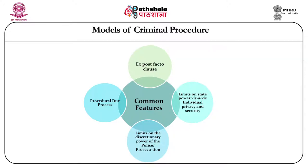The fourth and last common ground is procedural due process. Both models accept that there should be a procedure by which a suspected criminal is dealt with. It is based on the assumption that the individual alleged to be a criminal is an active agent in the process, and his guilt must be demonstrated before an independent authority. Criminal process is a contest between two independent actors — the accused on one side and the prosecution on the other — though the relative importance each model gives to procedural due process differs.